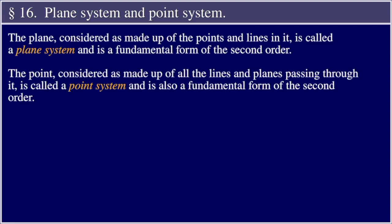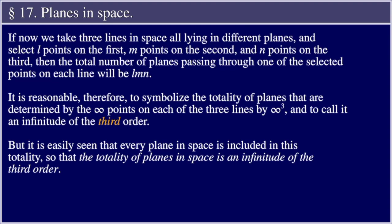Section 16, Plane System and Point System. The plane, considered as made up of points and lines in it, is called a plane system and is a fundamental form of the second order. The point, considered as made up of all the lines and planes passing through it, is called a point system, and it is also a fundamental form of the second order.